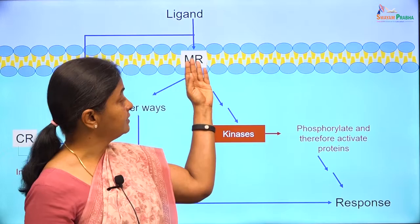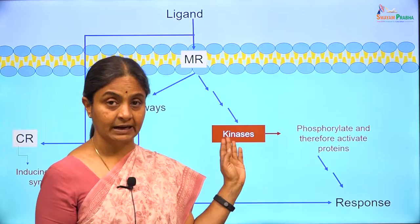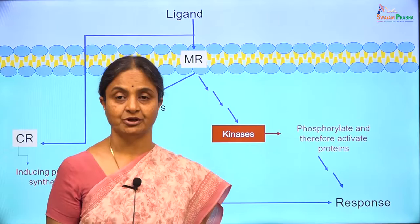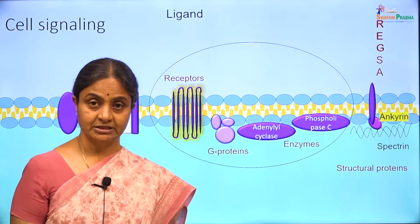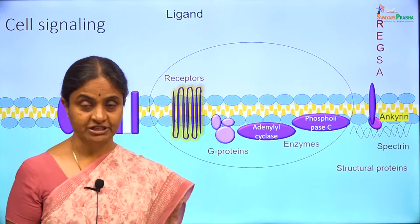One set of pathways involves the ligand-membrane receptor combination activating certain kinases within the cell. The kinases would phosphorylate certain proteins and those would bring about responses. We will link this to an earlier slide considered in the very first lectures — a slide on membrane proteins.